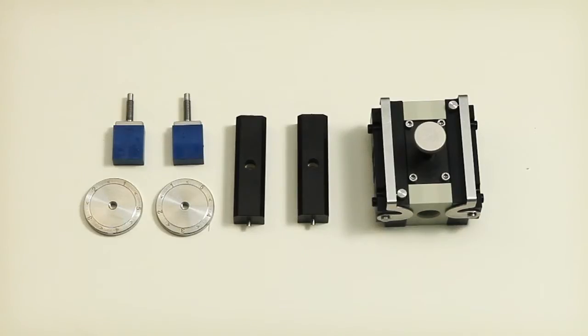This video is to show you how to mount your sample in the adjustable gap cell and how to mount the cell in Surpass. We are going to mount a flexible polymer foil.